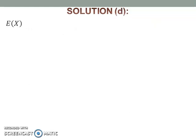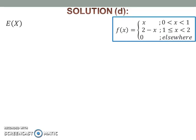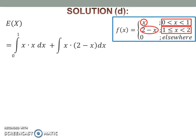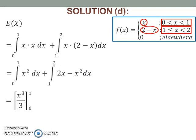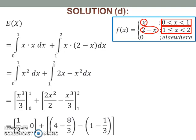To find the expected value of x, integrate x times the function of x with respect to x from 0 to 1. Then substitute all the limits into their corresponding x and calculate the value.